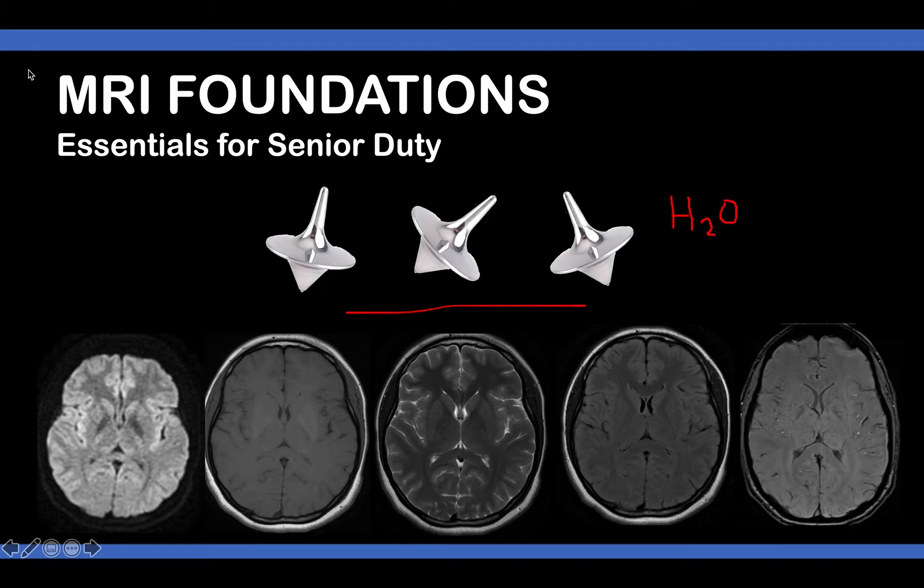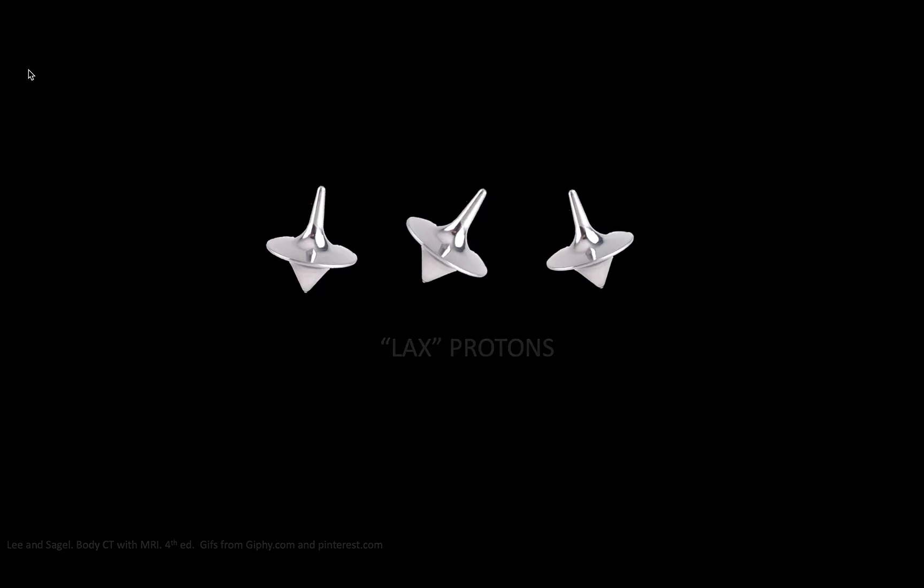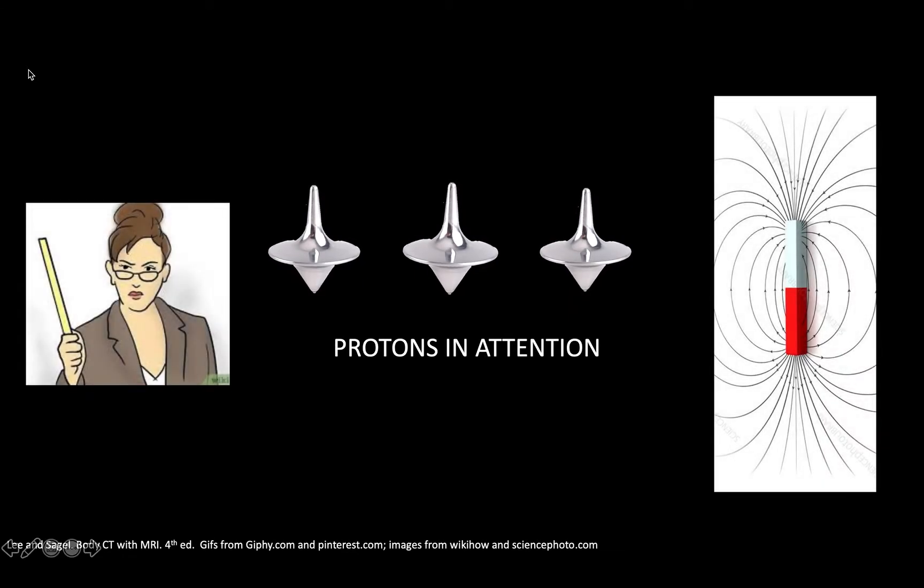In the natural environment, these protons will be just like this - some will be spinning this way, some will be oriented this way. But what will happen if we put these three protons inside a box with a strong magnet inside? If we put these protons inside the box with the magnet inside it, the protons will be in attention.